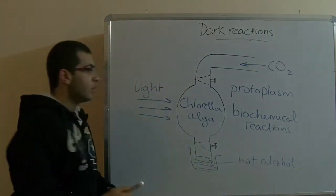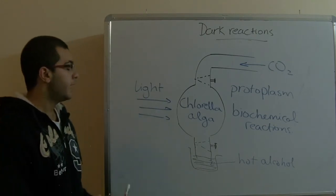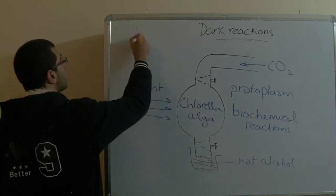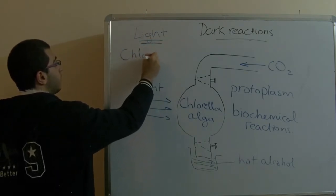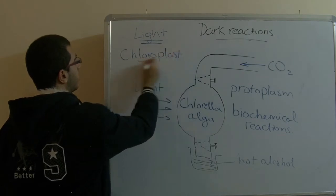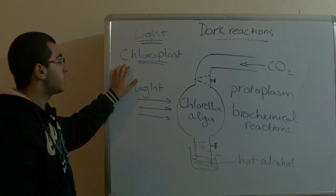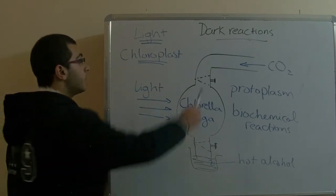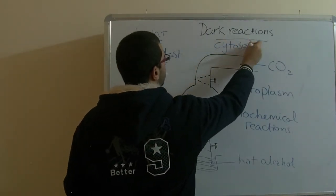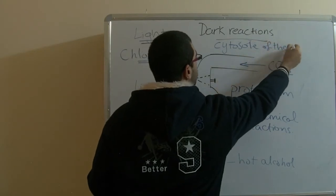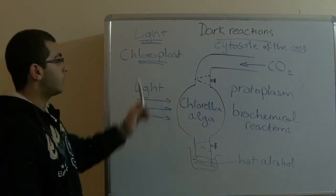When we talked about the light reactions, we said that the chlorophyll absorbs energy, and accordingly the light reactions take place in the chloroplast, because the chloroplast is where the chlorophyll is abundant. While in the dark reactions, it is carried in the cytosol of the cell — the cytoplasm — and any other place outside the chloroplast.